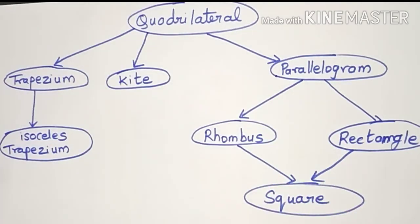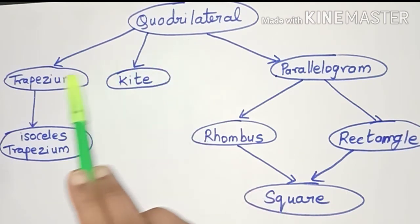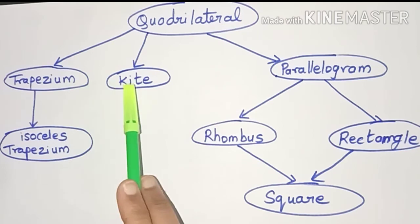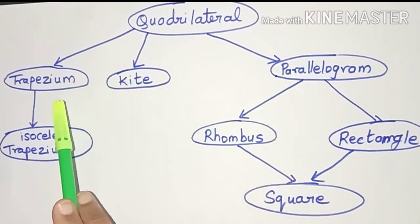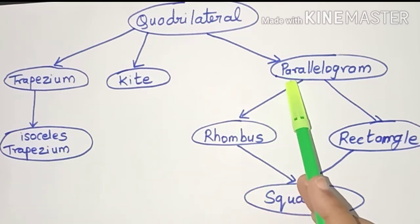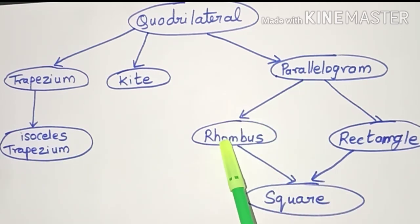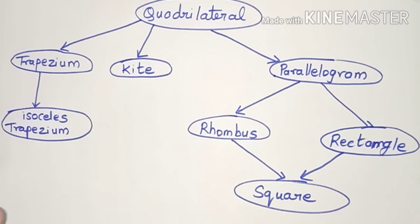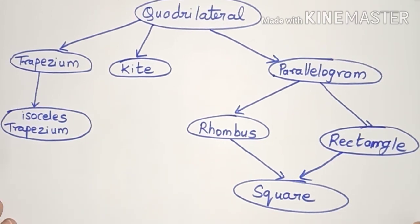To summarize, there is a quadrilateral and three main types we studied: the trapezium, the kite, and the parallelogram. There is a special type of trapezium called the isosceles trapezium. A parallelogram has two special types — a rhombus and a rectangle — and these two combined give you a square. This is a summary of quadrilaterals and their different classifications.